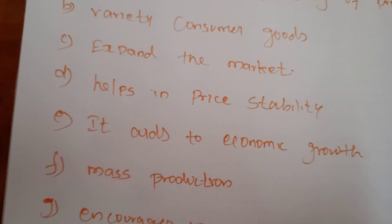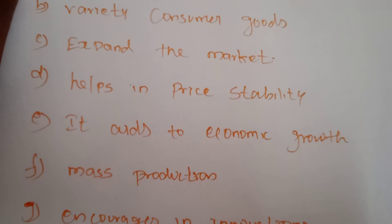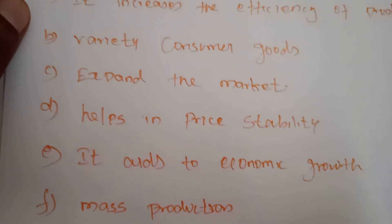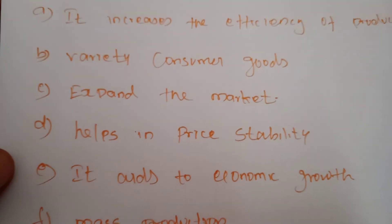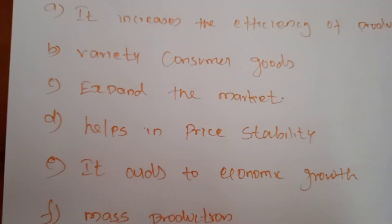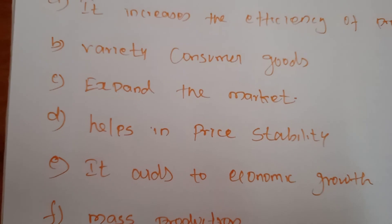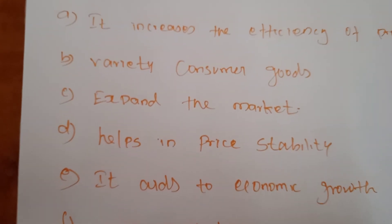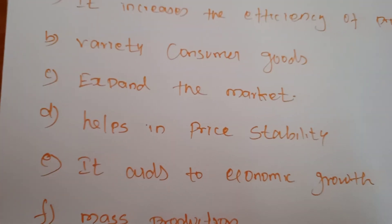Transport also helps in price stability by distributing goods all over the country. When we use transport, we get all types of commodities in proper time whenever demand arises. Without transport facilities, we cannot get commodities when demand arises, so the price will increase if supply cannot be increased. Because of transport, we get all types of commodities at the proper time in all markets, keeping the price of all commodities stable and reasonable.